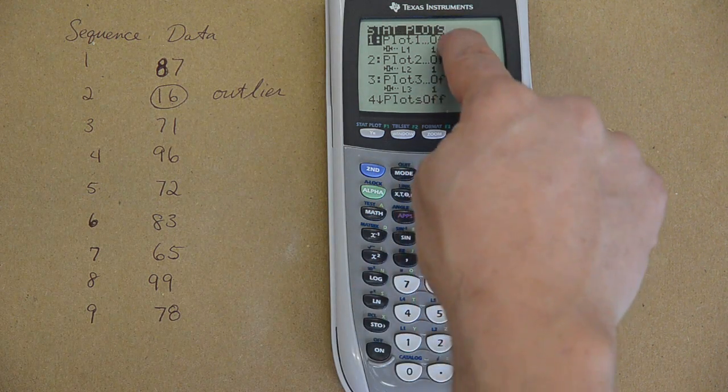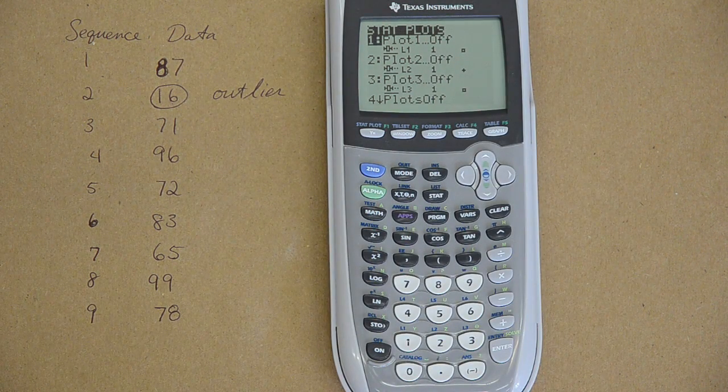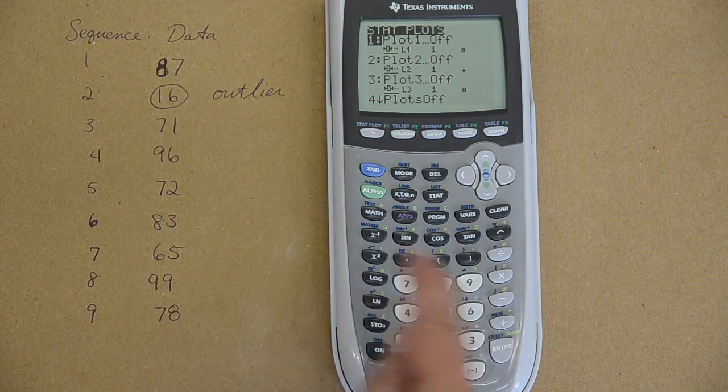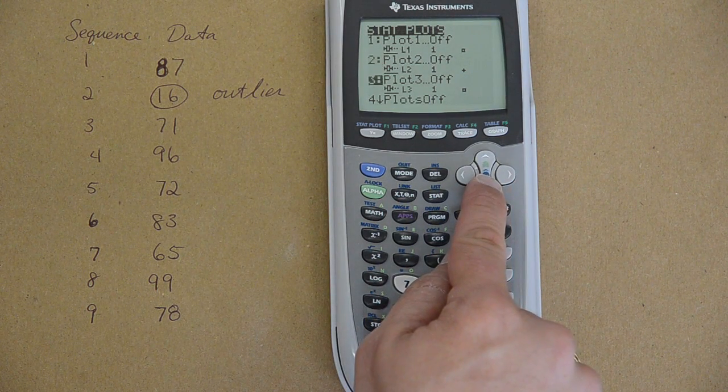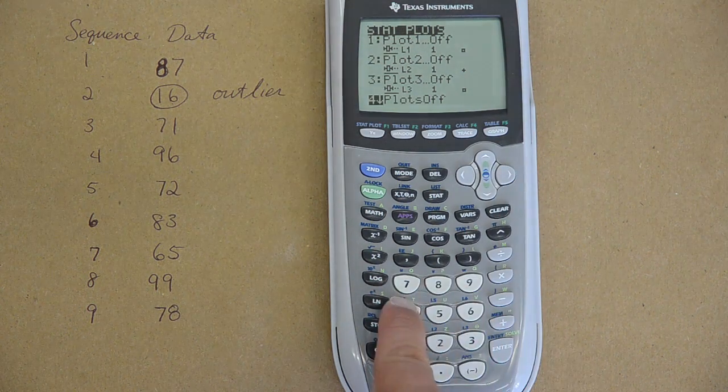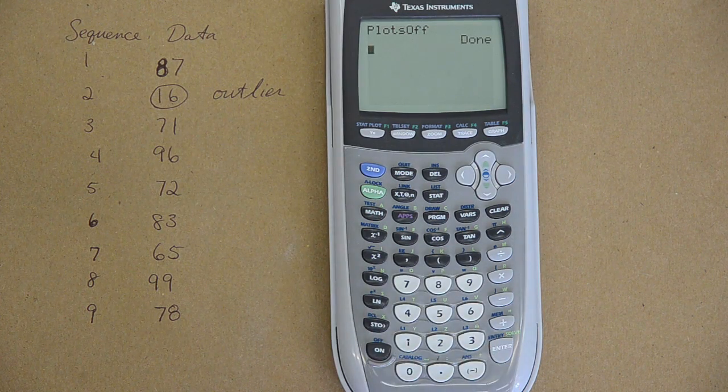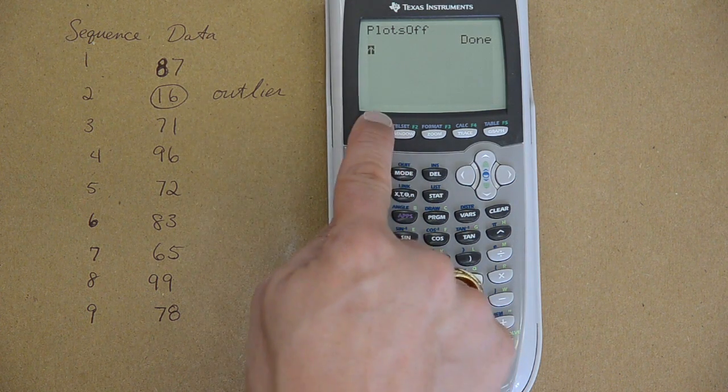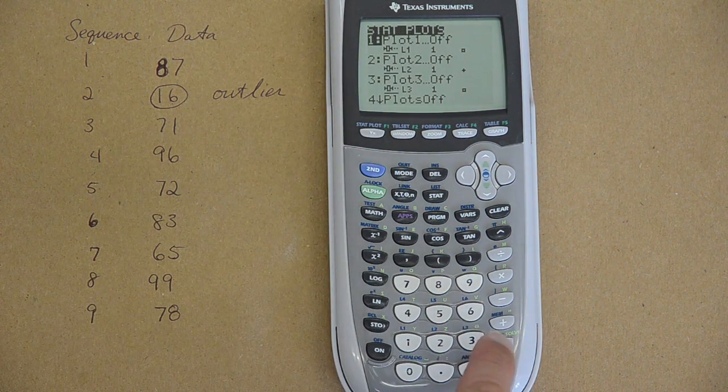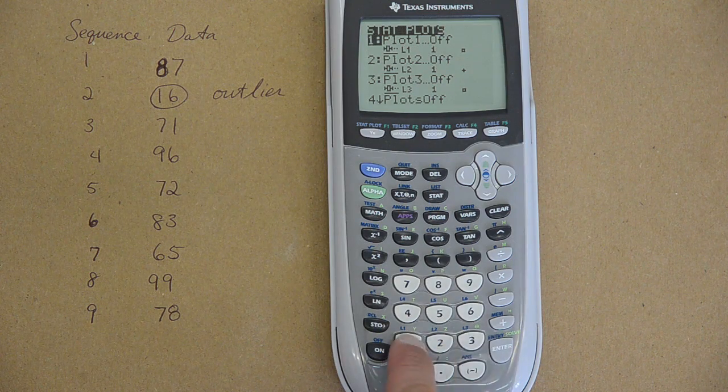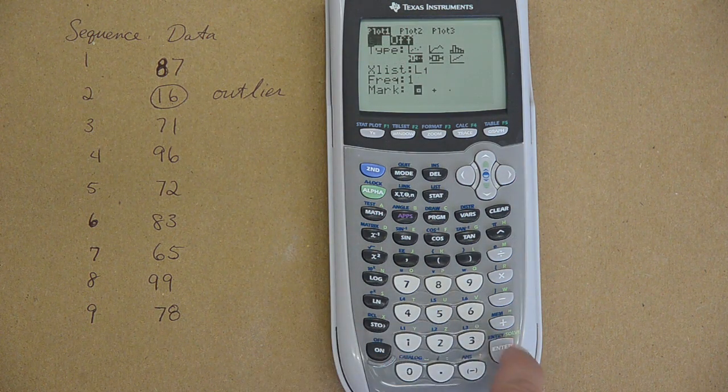All my plots are off, that is important if you are just learning how to use your graphing calculator. I don't want any mistakes to show up. I am going to choose one. If some of them are on, you can hit four and that turns all your plots off at once. I want to go to stat plot, one, and I want to turn it on by hitting enter.